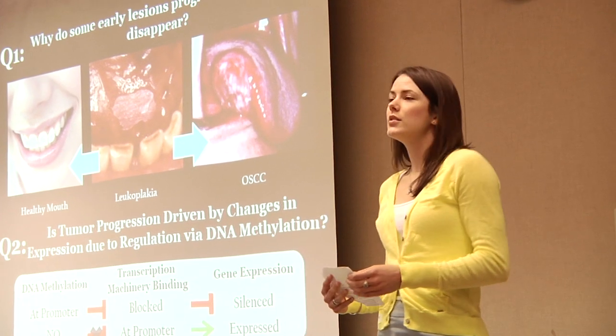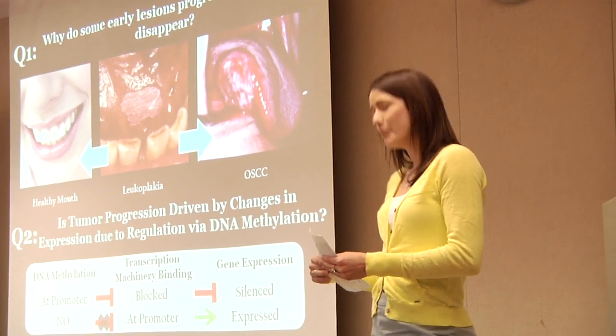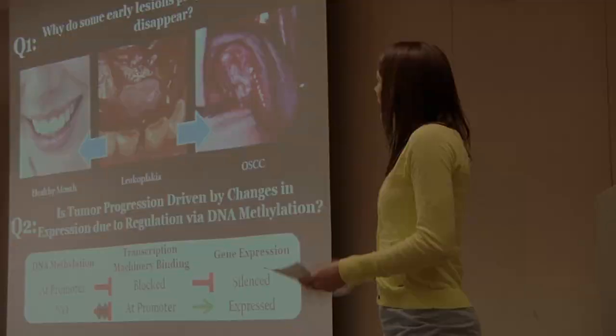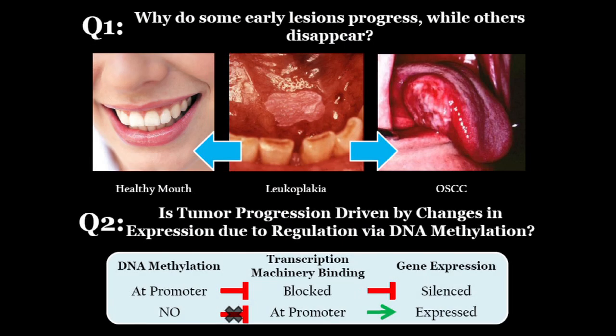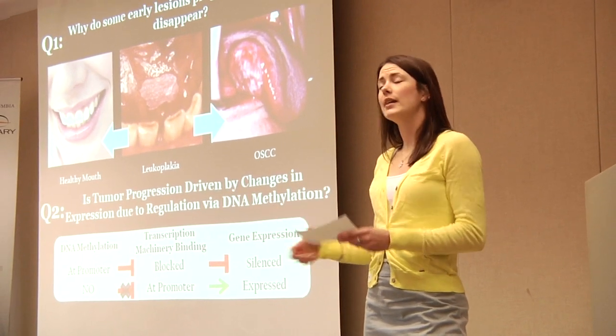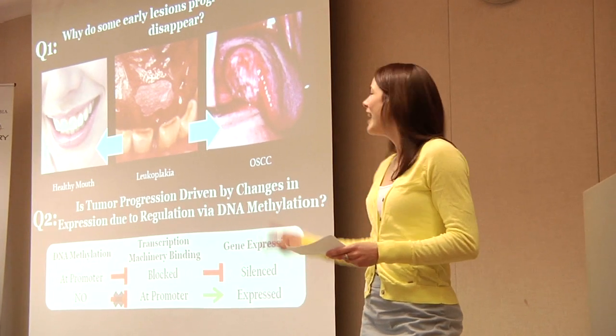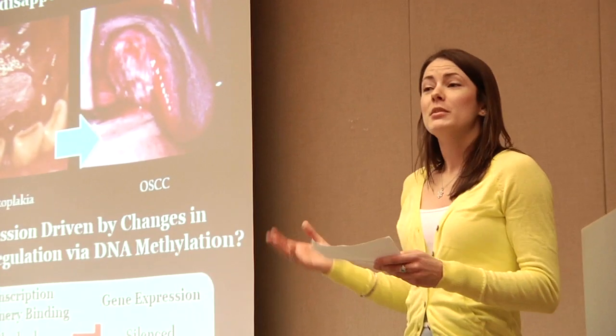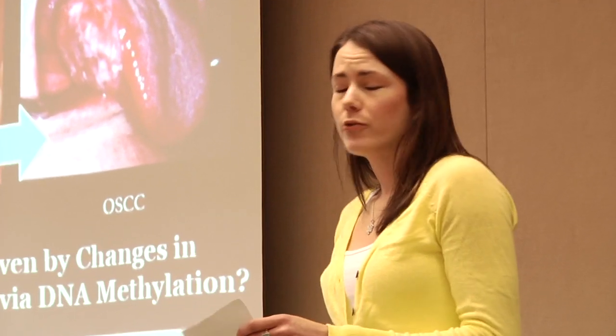One of the confounding issues is our inability to determine how the earliest stages of this disease will behave. Why do some early lesions progress while others disappear? An early lesion such as the dysplasia or the leukoplakia shown here in the middle can either regress on its own or it can develop into a full-fledged oral squamous cell carcinoma as shown on the right. The problem is the majority of these early lesions will not progress — they will not form tumors, and as a result they are just followed via watchful waiting. This allows for formation of tumors in those progressing patients. So if we could find a way to determine which early lesions will progress and surgically remove them, we could vastly improve patient care.